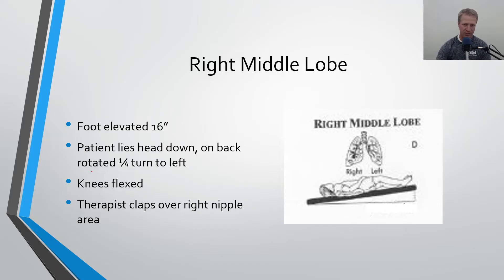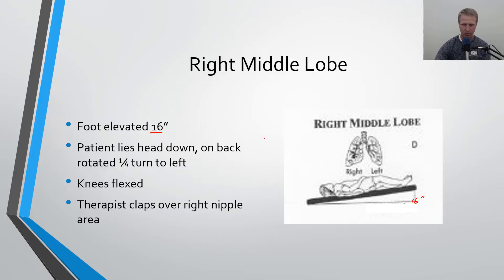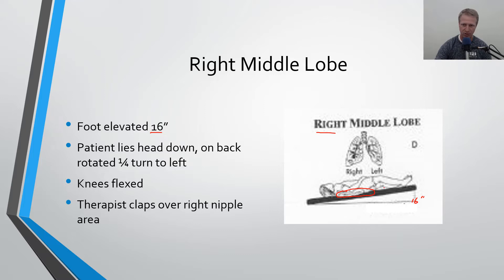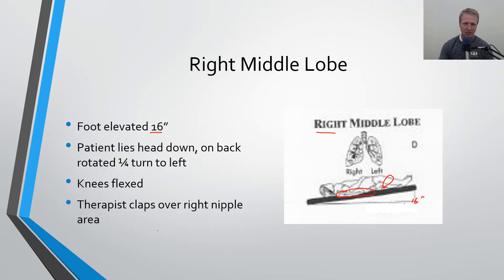For the right middle lobe, this is where things get a little funny. You elevate the feet 16 inches — this is a Trendelenburg position where the head is lower than the feet. Have the patient lie on their back and rotate a quarter turn, about 45 degrees. Stuff a pillow underneath their hips to help them into that quarter turn position, knees flexed for comfort. The therapist claps right over the nipple area. For females, clap just immediately below or above the breast tissue to reach the rib cage.